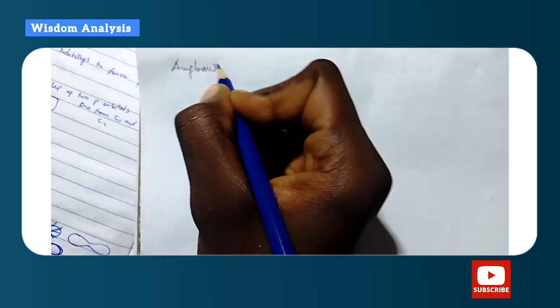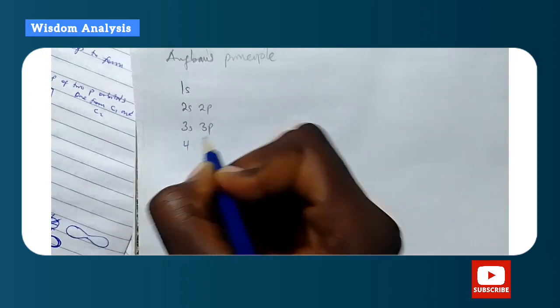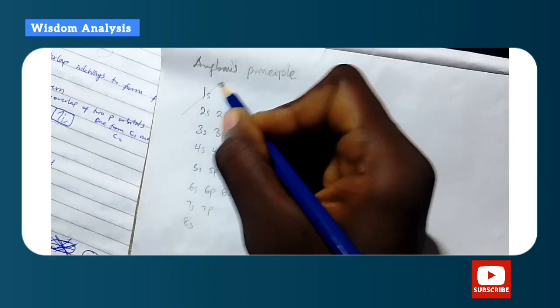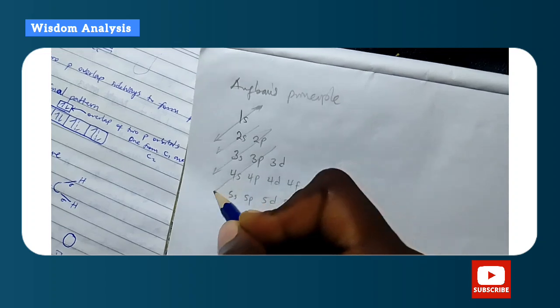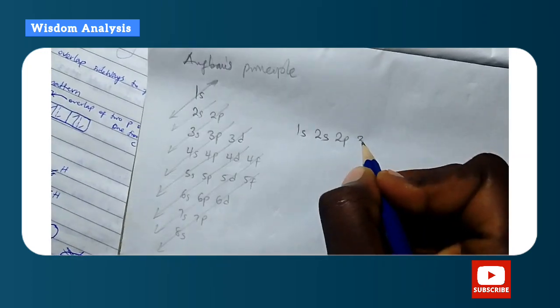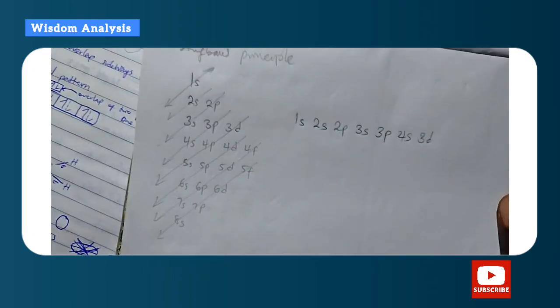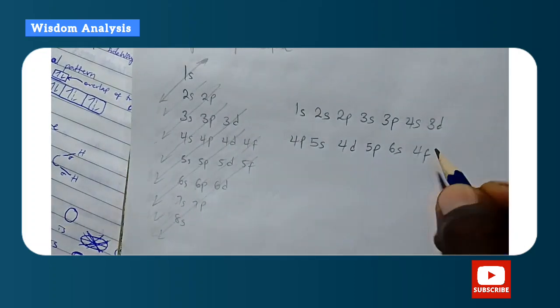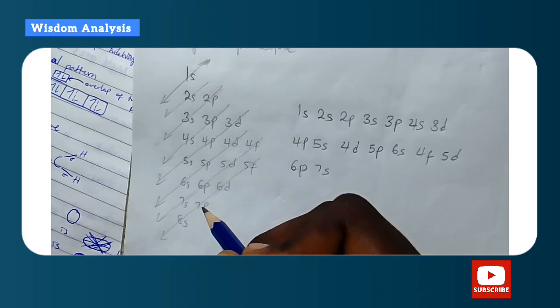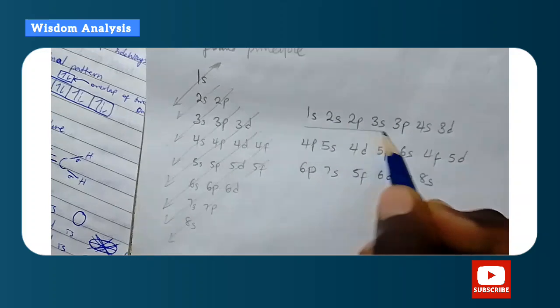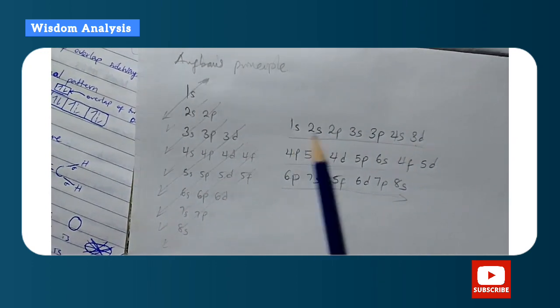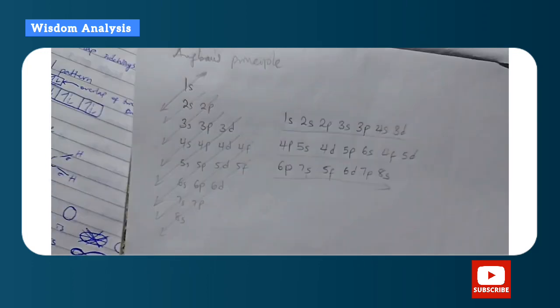From the Aufbau Principle, we can draw a diagonal arrow diagram through the shells and their subshells to give the order of filling in increasing energy levels: 1s, 2s, 2p, 3s, 3p, 4s, 3d, 4p, 5s, 4d, 5p, 6s... Notice that 4s is filled before 3d.